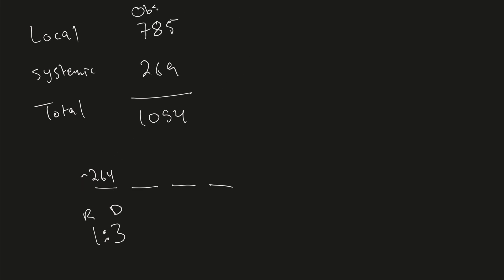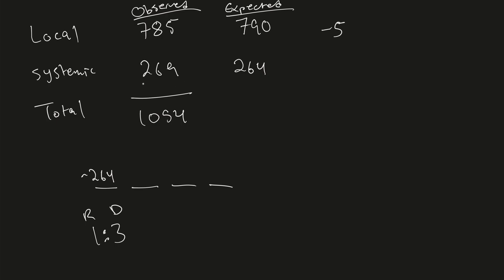Our observed values are 785 for local lesions and 269 for systemic. Our expected value, assuming a perfect 1 to 3 ratio, is 264 for systemic infections and 264 times 3, which gives around 790, for local lesions. The difference between observed and expected: 785 minus 790 gives us negative 5 for local lesions, and the observed minus expected for systemic infections also gives us a difference of 5.